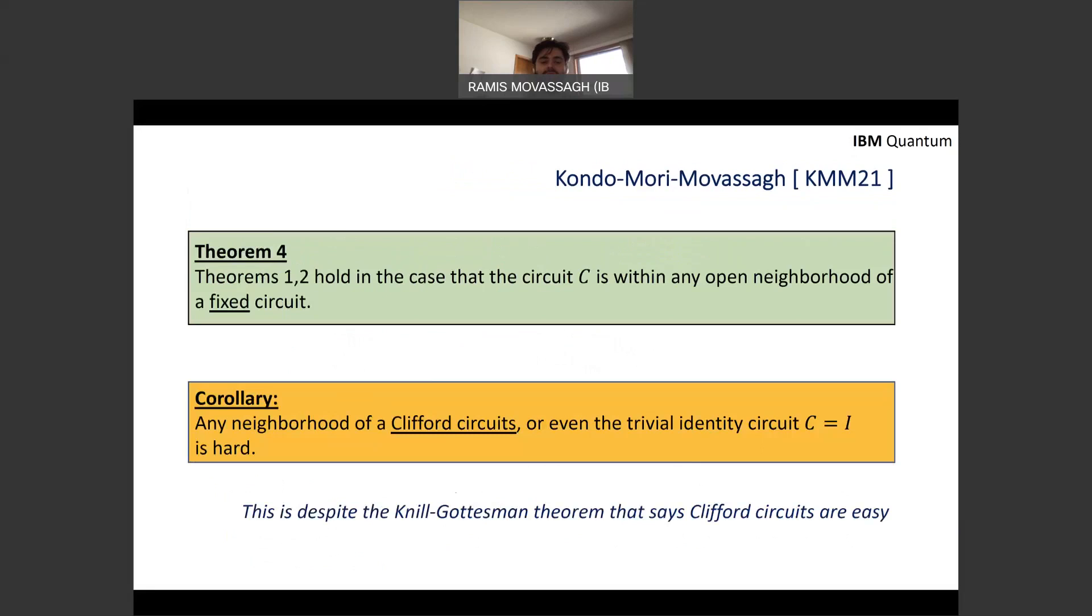What is perhaps surprising is that the proof also extends to any open neighborhood of a fixed circuit. So in particular, if you consider Clifford circuits for which by Gottesman-Knill theorem, we know that they're in P—the exact Clifford circuits can be simulated in P on classical computers. But if you consider neighborhoods of them, as the proof structure will show in a minute, including the all trivial circuit C being the identity circuit, the probability amplitudes remain to be hard to estimate to 2^{-M log N}. And that's perhaps surprising, very interesting to me.